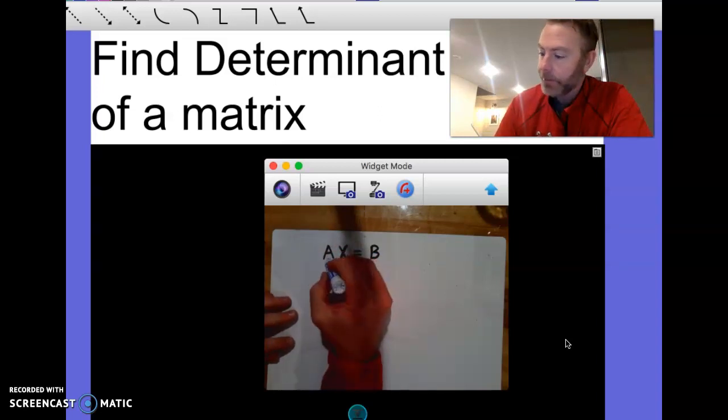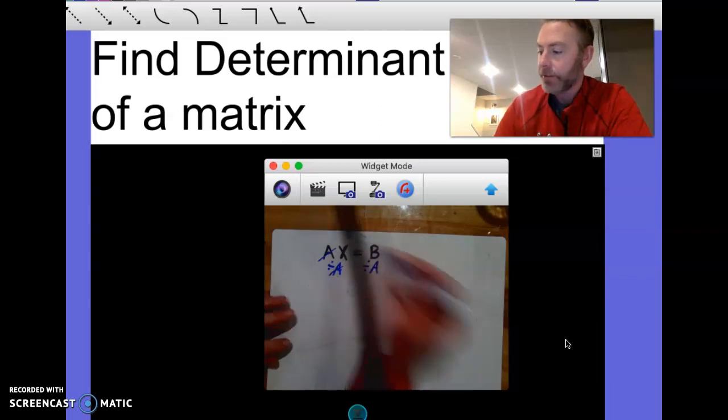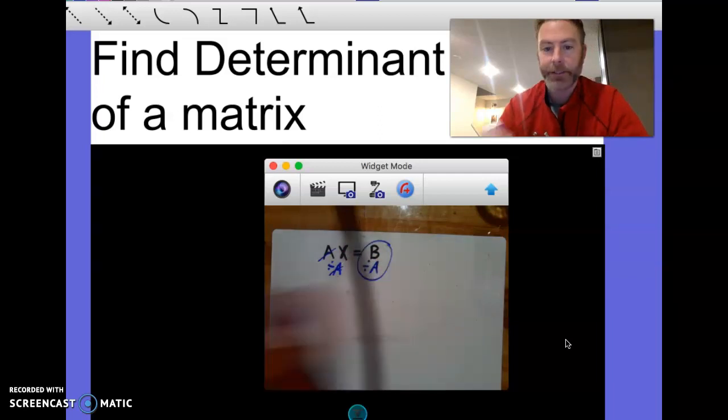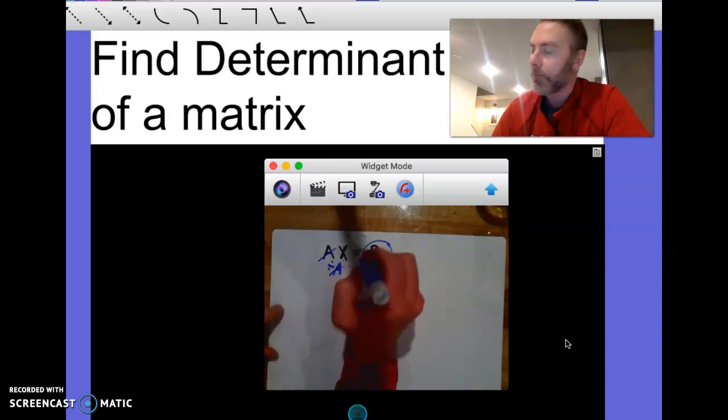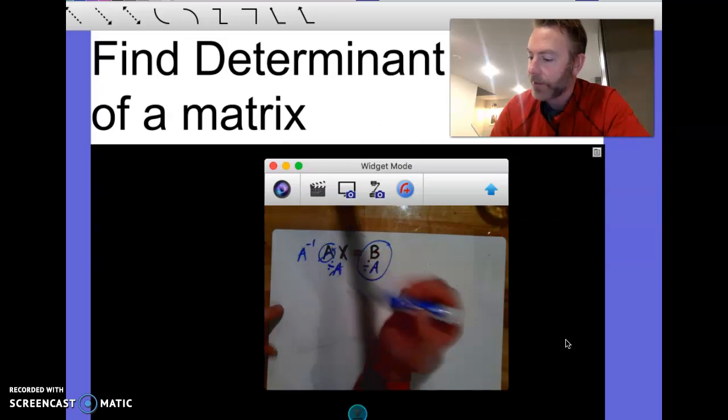This is a matrix times a matrix equals another matrix. We don't have division of matrices in our toolbook. So we're going to do something a little bit different today. We're going to set the parameters to how we go about getting rid of this.